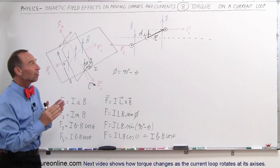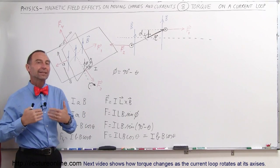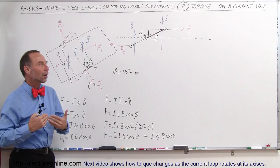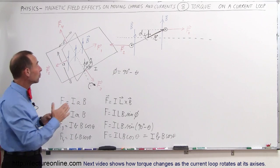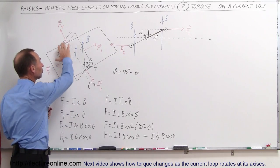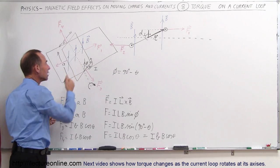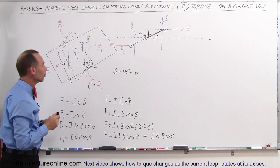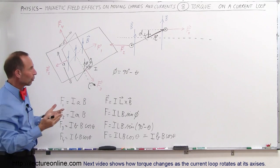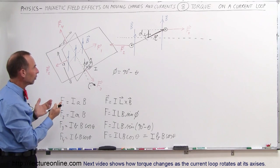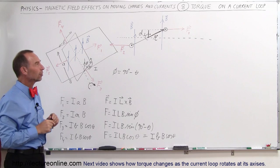Welcome to ElectronLine. In this video we're going to show you how to calculate the torque on the current loop. In the previous video we showed you the forces on the four sides of the current loop, and you can see that the net force was equal to zero, but the net torque is not going to be equal to zero.